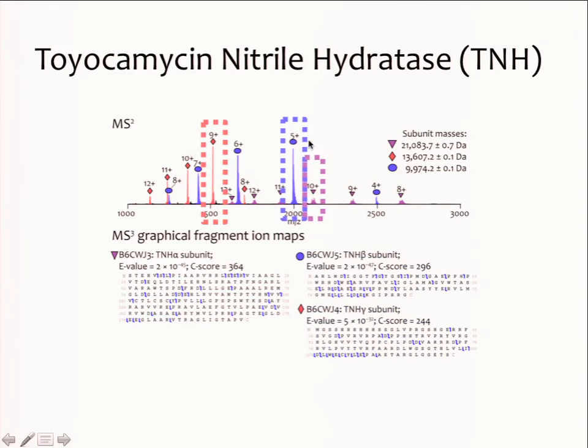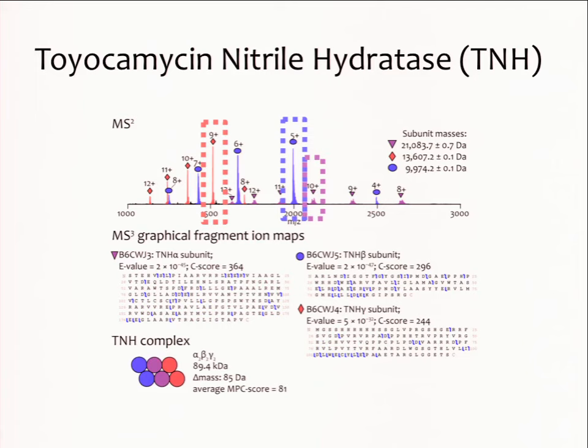We then repeat the process with the remaining monomers — the red and blue — which correspond to the TNH beta subunit and the TNH gamma subunit. Searching these through our pipeline, we determine that the stoichiometry for each monomer comes back as alpha-2, beta-2, gamma-2, which corresponds with published literature. The delta mass of 85 remains constant, and we have an average MPC score of 81.